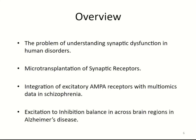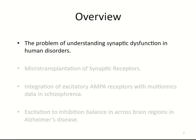We will use the information from microtransplantation to explain how we can use the amplitude of responses of the ion fluxes through the receptors and integrate that data with multiomics, particularly transcriptomics and proteomics in schizophrenia. And once we know about the excitatory AMPA receptors, we'll explore whether this information together with inhibitory GABA receptors — the most abundant inhibitory receptors in the system — can be used to measure excitation-to-inhibition balance across brain regions in Alzheimer's disease.